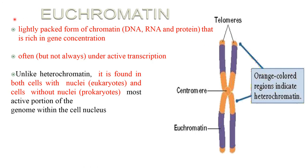Euchromatin is the lightly packaged form of chromatin that is rich in gene concentration, often but not always under active transcription. Unlike heterochromatin, it is found in both prokaryotes and eukaryotes and represents the most active portion of the genome within the cell nucleus.